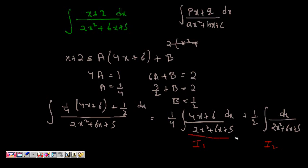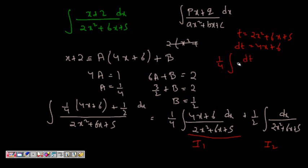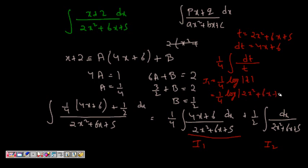We evaluate both integrals separately. For I1, we substitute t equal to 2x² plus 6x plus 5, so dt equals (4x plus 6) dx. By substitution, I1 becomes (1/4) times integral of dt/t, which is straightforward: I1 equals (1/4) log|t| = (1/4) log|2x² plus 6x plus 5|.